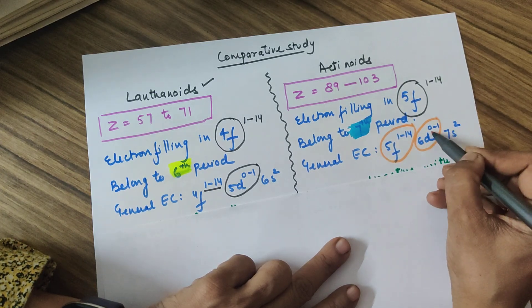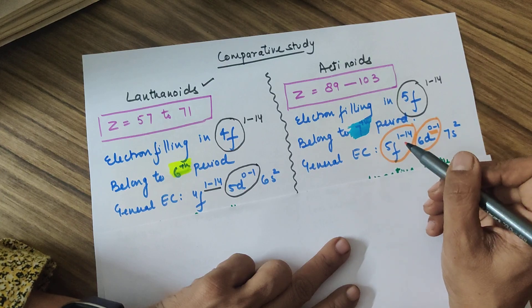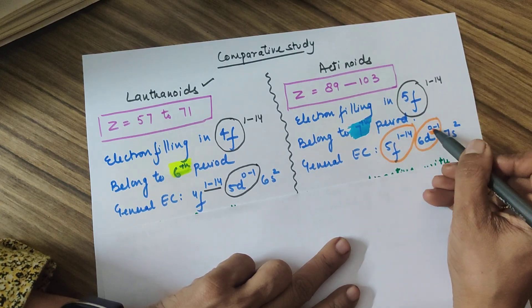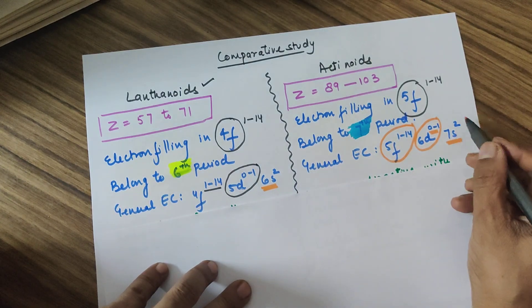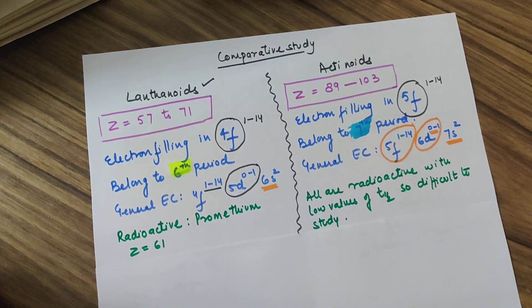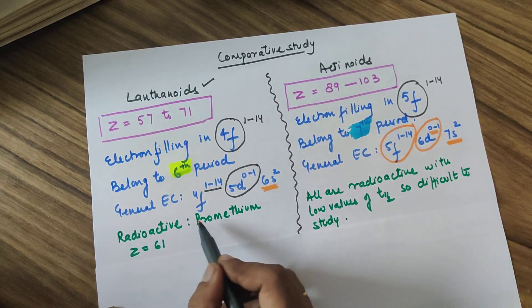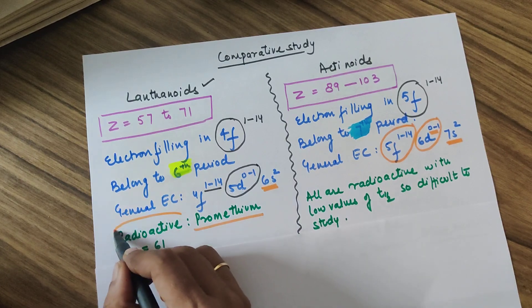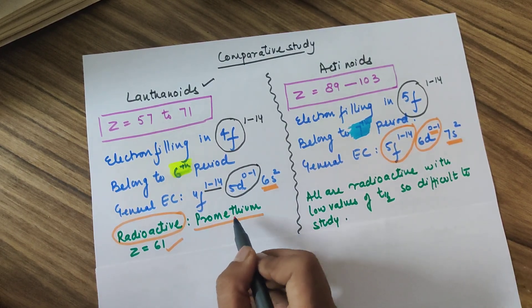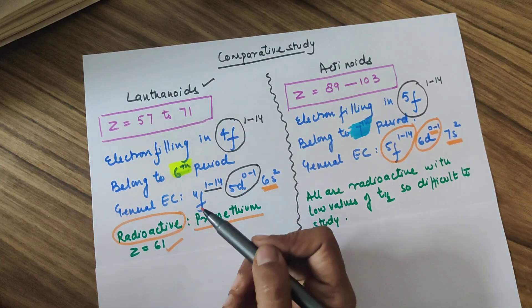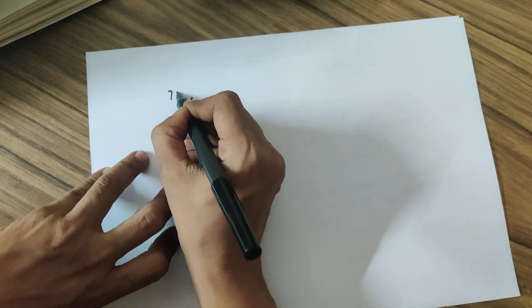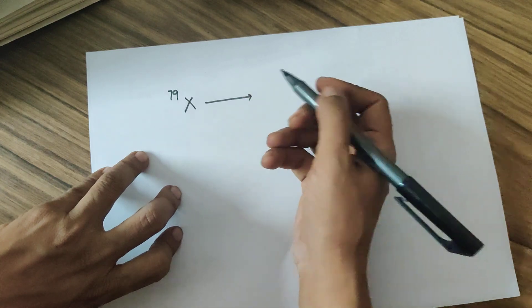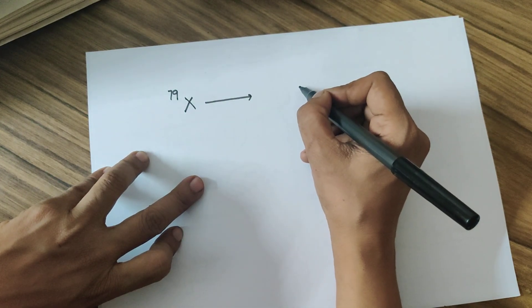The general configuration for actinoids involves filling 5f¹⁻¹⁴, with 6d⁰⁻¹ only to stabilize the configuration — if 5f has 8 electrons, one shifts to 6d to achieve stable 5f⁷. The last electron for actinoids is in the seventh shell, giving them one extra shell compared to lanthanoids. Out of the 15 lanthanoids, only promethium (Z=61) is radioactive — meaning its nucleus is unstable.